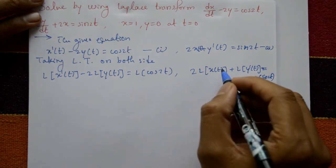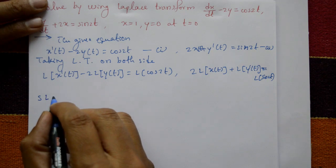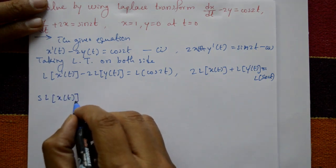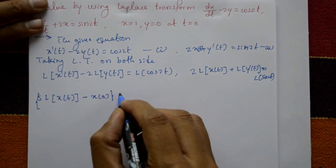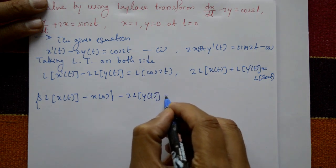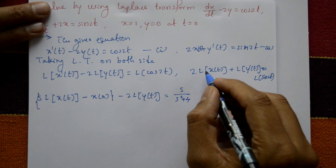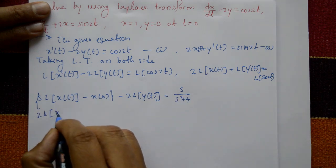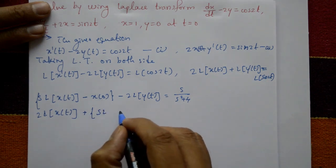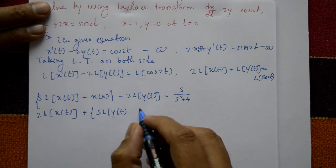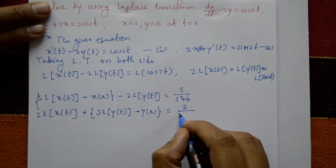Using the Laplace derivative formula, L{x'(t)} = s·L{x(t)} minus x(0). So equation 1 becomes: s·L{x(t)} minus x(0) minus 2·L{y(t)} equals s/(s²+4). Equation 2 becomes: 2·L{x(t)} plus s·L{y(t)} minus y(0) equals 2/(s²+4).